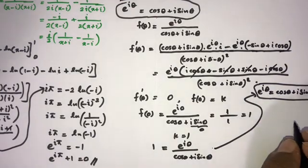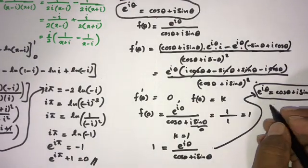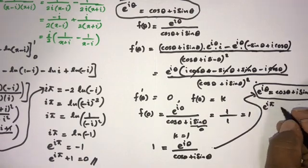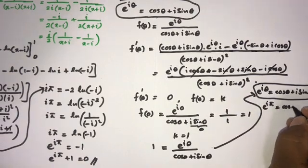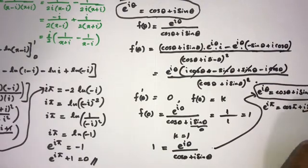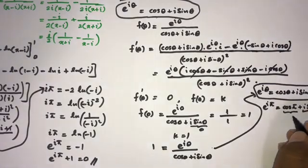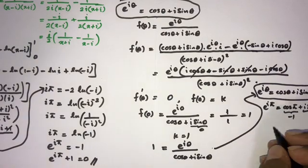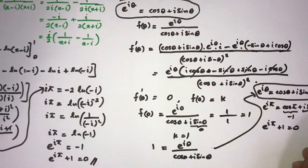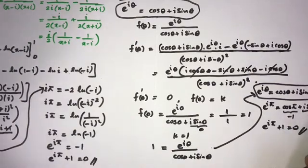Now plugging in pi for theta: e to the i pi equals cosine pi plus i times sine pi. We know cosine pi equals minus 1 and sine pi equals 0, so e to the i pi equals minus 1, and therefore e to the i pi plus 1 equals 0.